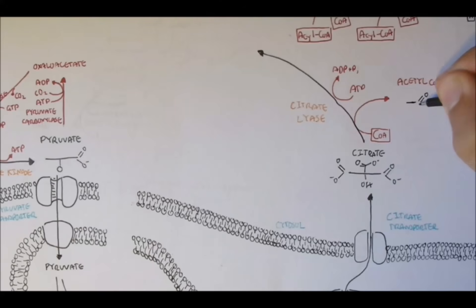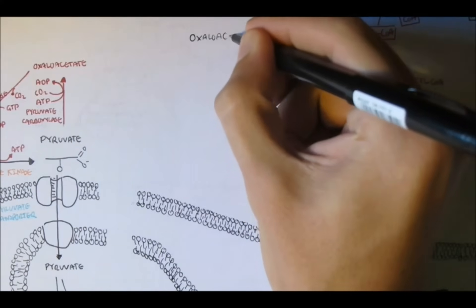And this reaction also requires ATP to run. So, ATP converts to ADP and one inorganic phosphate. So, acetyl-CoA is now in the cytosol. Voila.